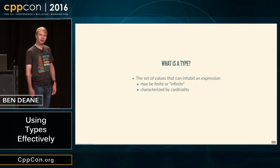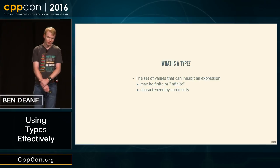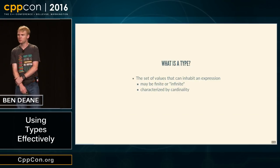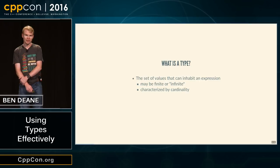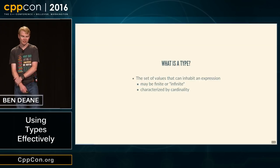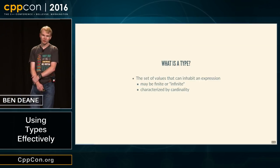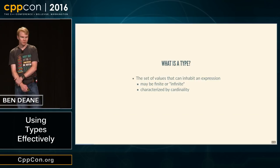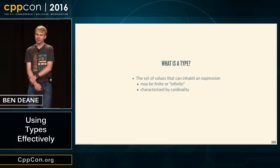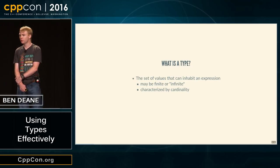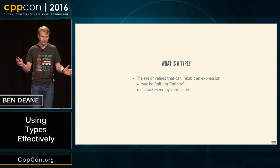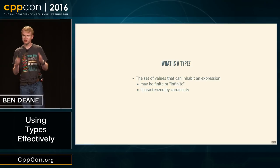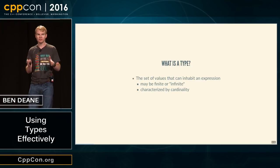In this talk, I want to look at how just a little bit of type theory can help us think about better APIs and more closely modeling our data. I want you to think about a type being a set of values that can inhabit a given expression. It might be finite, like a boolean, or infinite, like a vector. In some sense, a type is characterized by the cardinality of the set — the number of things we can fit into that bucket.